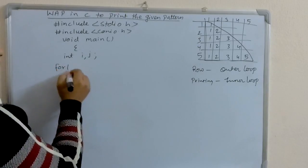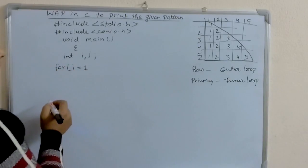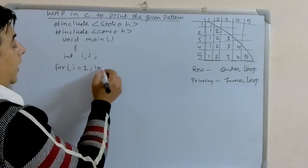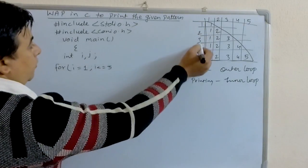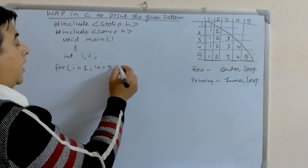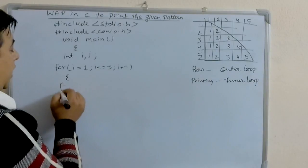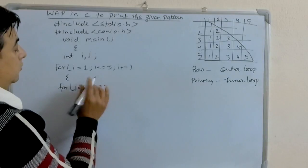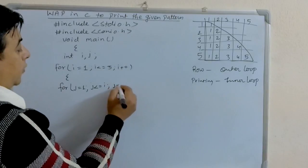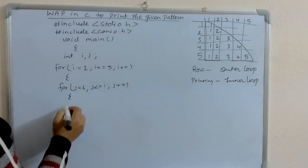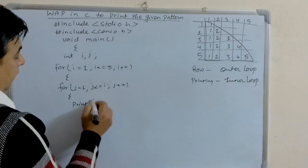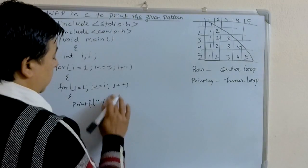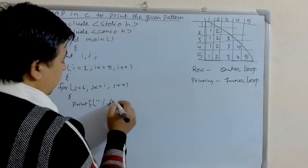The outer loop: for i = 1 — the outer loop begins with 1, the first row. i is less than or equal to 5, because there are 5 rows to print. i++. Inside it, the inner loop: j = 1, j less than or equal to i, j++. Inside here, printf "%d\t" to print the number with a tab.